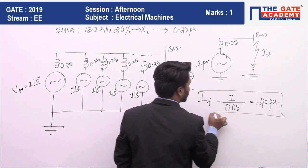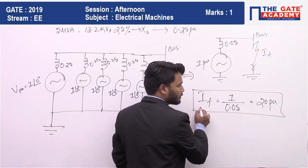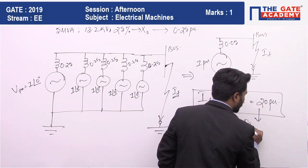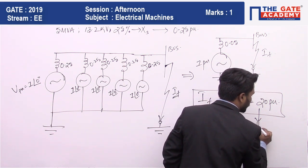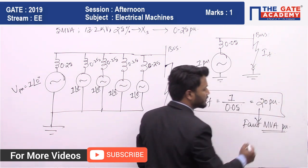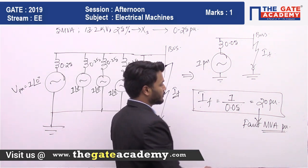Fault current is 20 per unit. Fault current per unit is equal to fault MVA per unit. You already know this relation. Therefore,